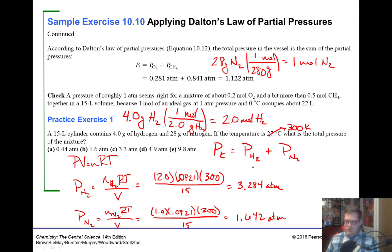So that means the total pressure is equal to 3.284 plus 1.642, which is 4.926. And so our answer here had two sig figs, so our answer will have two sig figs. So 4.9 atmospheres. Cool.